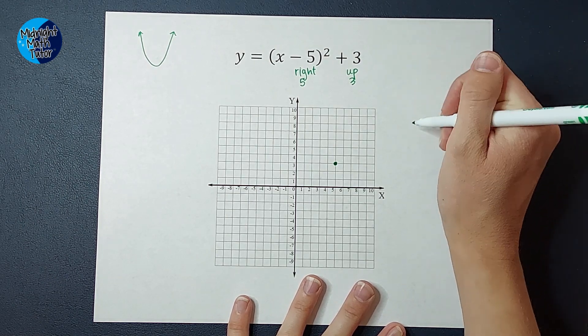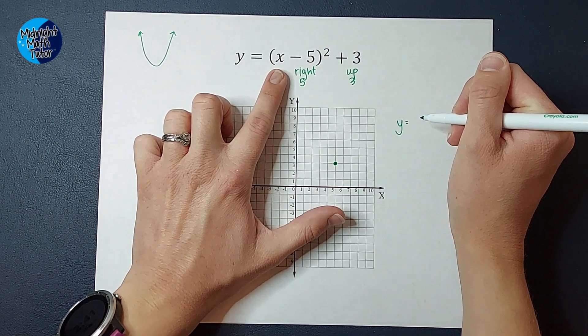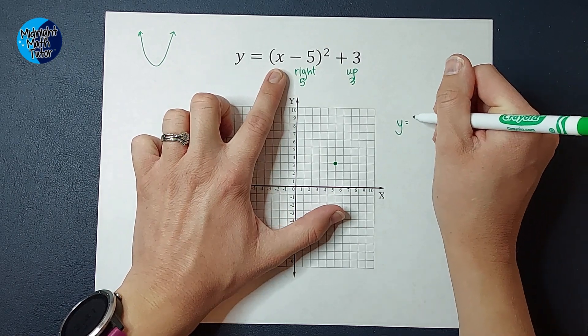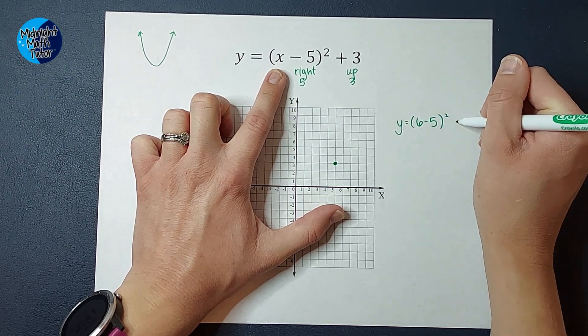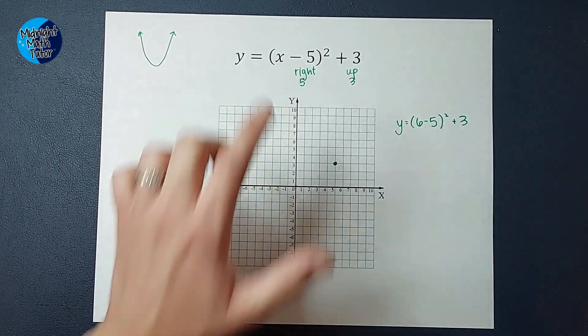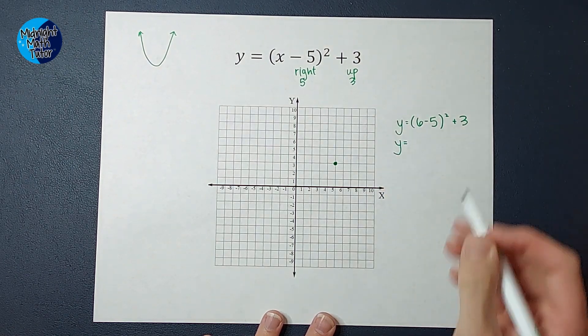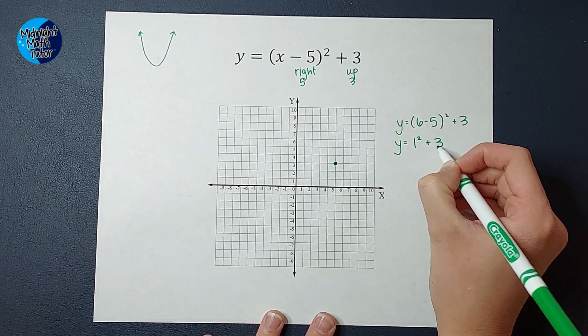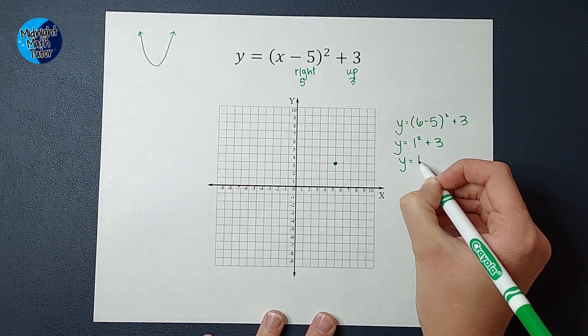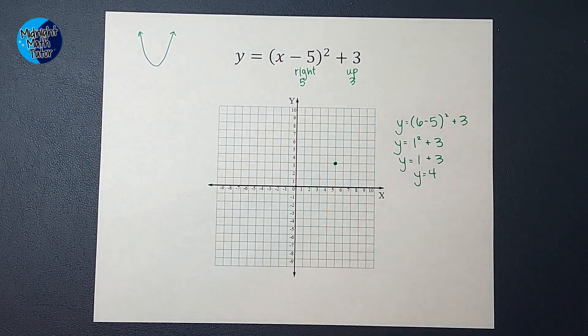So we are going to have y equals, we're going to plug in six for x. So we're going to have six minus five squared plus three. Continuing to solve that down, I've got six minus five, which gives me one squared plus three. One squared is one, right? So I've got one plus three, and one plus three is four.